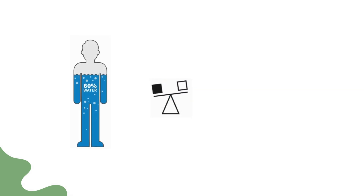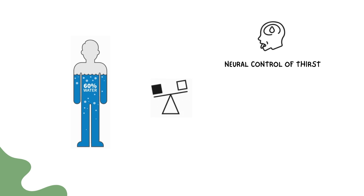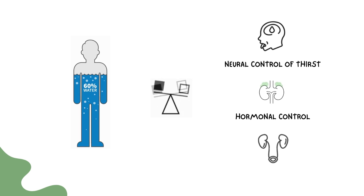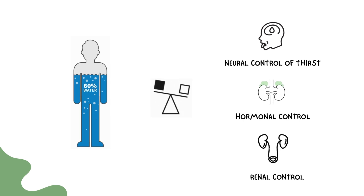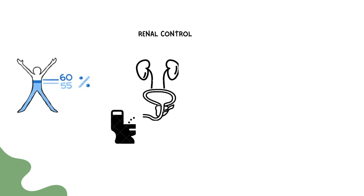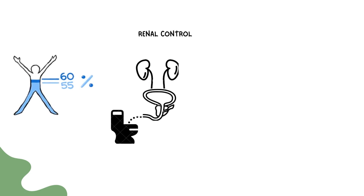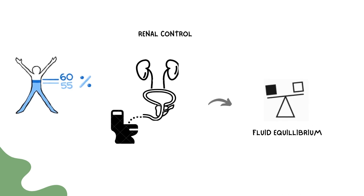The maintenance of a balance between fluid gain and loss is ensured by a number of physiological mechanisms, including the neural control of thirst, hormonal control, hemodynamic changes, and renal control of salt and water excretion. For instance, renal excretion of urine makes sure that excess electrolytes and metabolic waste products are eliminated together with water, ensuring fluid equilibrium.